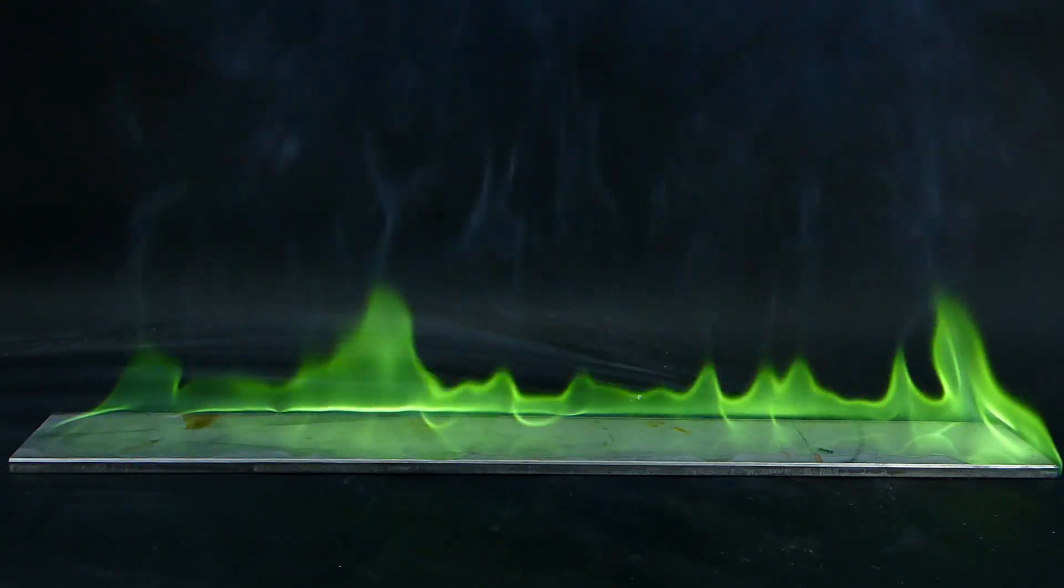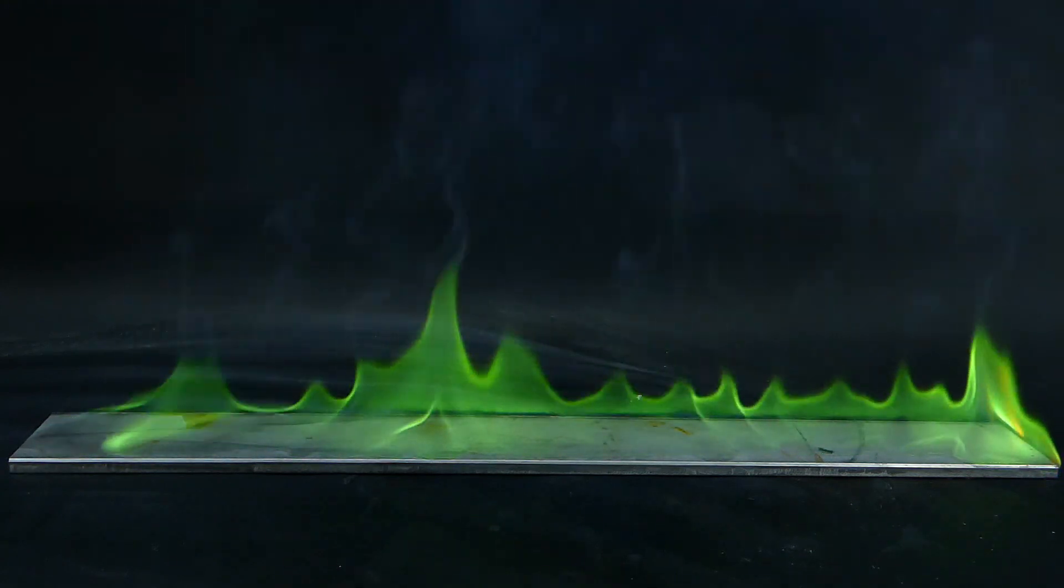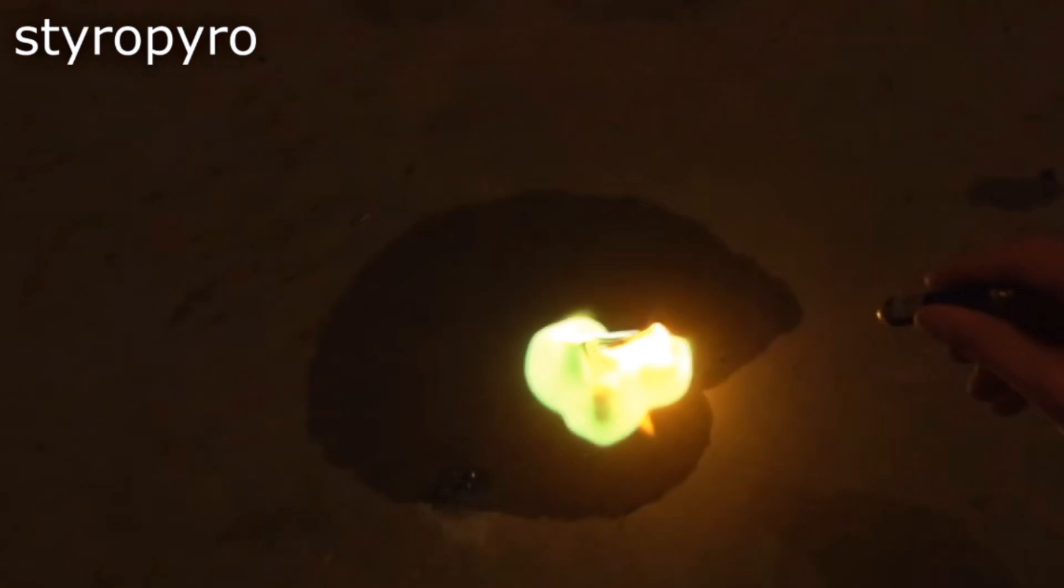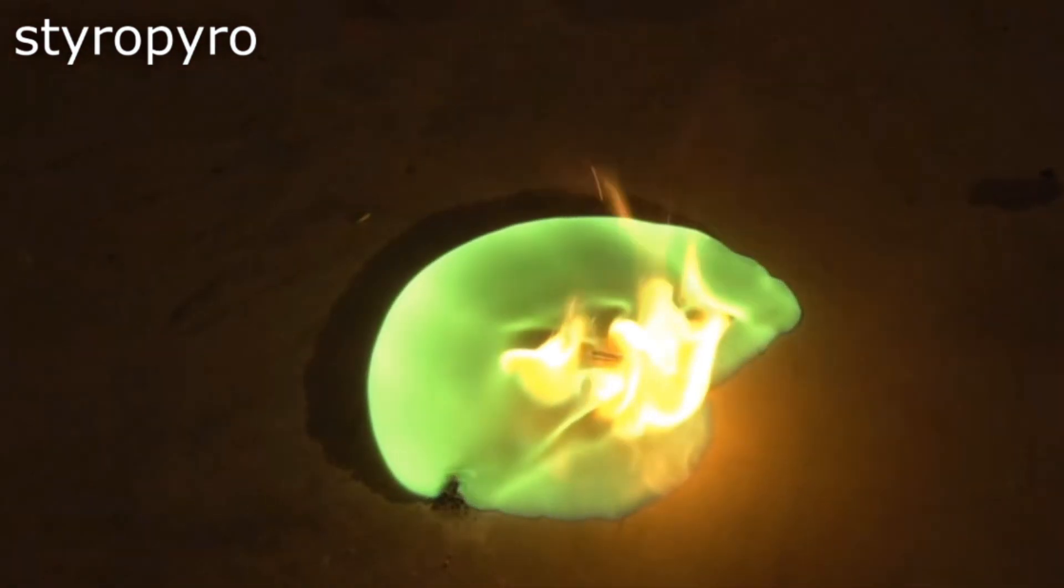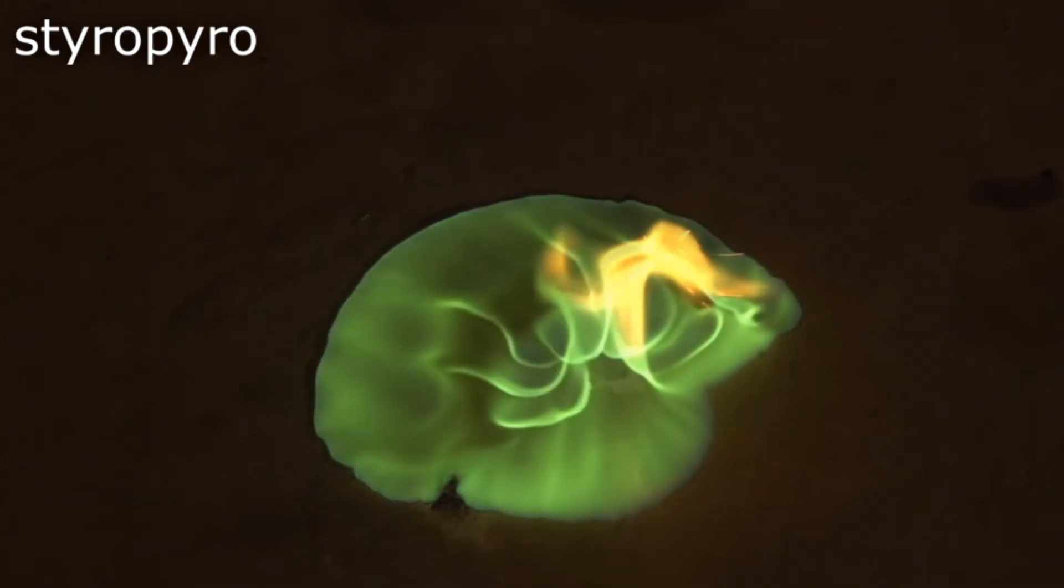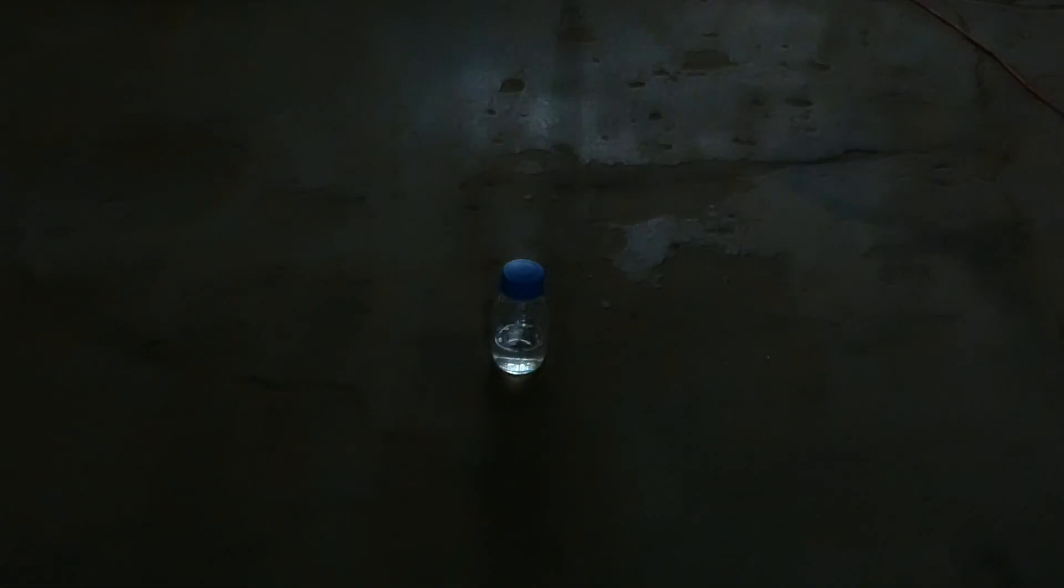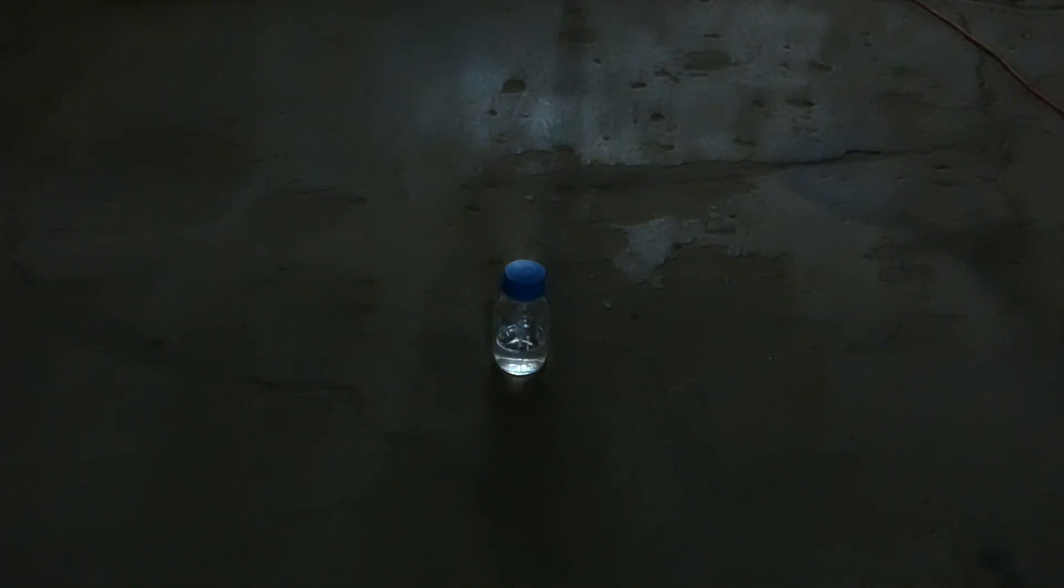As a final experiment, I decided to pay tribute to Styropyro, who is one of my favorite chemistry youtubers. He always makes this green fire on the floor, which I always found quite interesting, and now I finally was able to replicate it. To do that, I cleaned a part of my floor of any flammable debris, put on a gas mask, and proceeded to pour most of my trimethyl borate onto the floor.